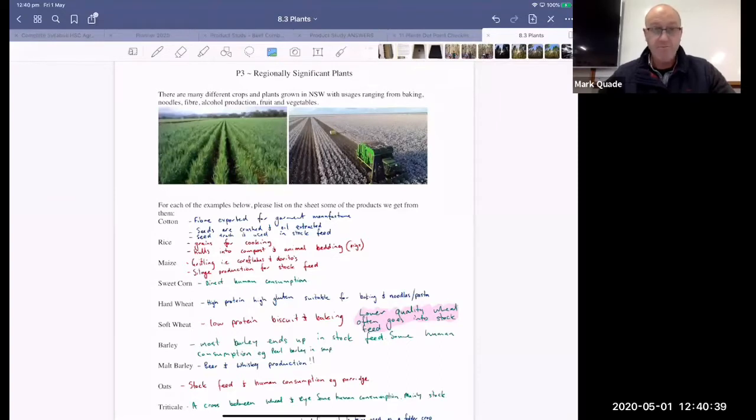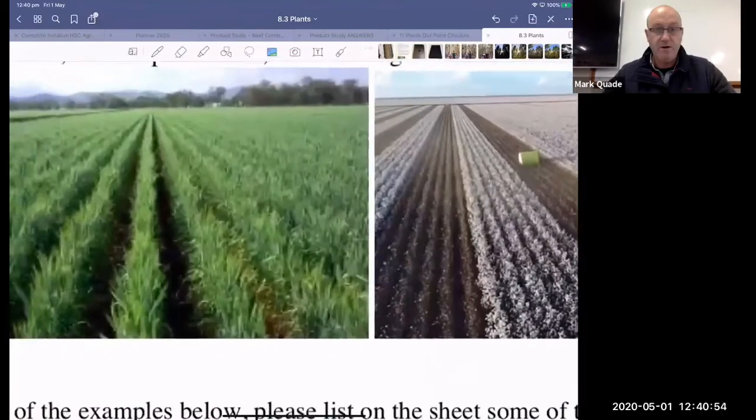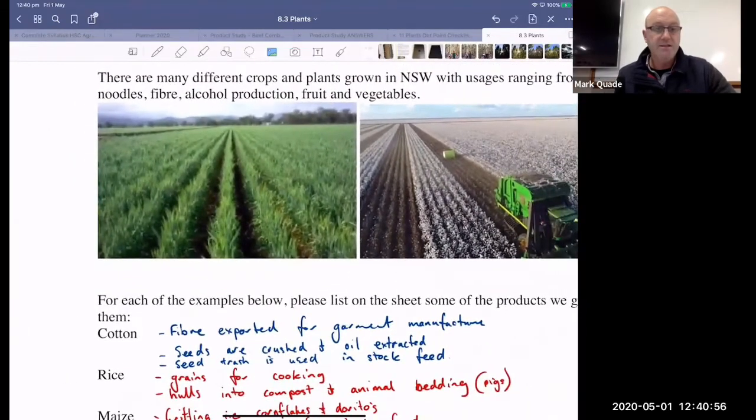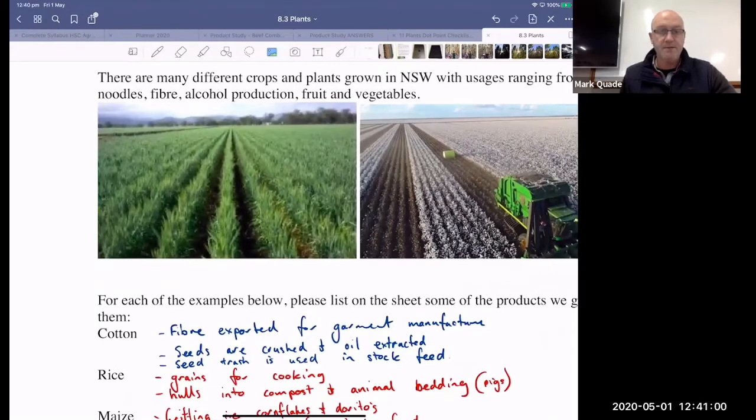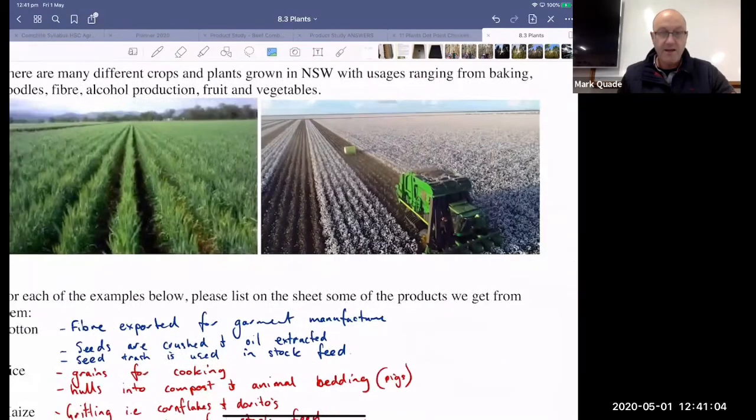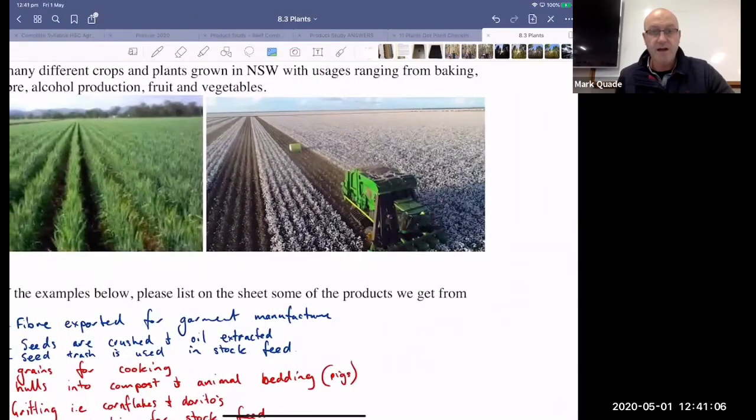For the most part, there's a lot of stuff that ends up in stock feed, some of it ends up in human consumption, and cotton produces fiber. I'm going to go through each of these with us here now. Up the top here, we've got some pretty pictures. The one on the left is of a wheat crop that's been planted somewhere in the Central West by the looks of it. And then we've got a cotton crop being harvested here.